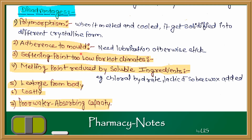Now let's talk about the disadvantages of theobroma oil, which is why other bases were adopted. The first disadvantage is polymorphism. Polymorphism means that when it is melted and cooled, it gets solidified into different crystalline forms. When it melts and resolidifies, it will create crystal forms which may cause irritation or affect uniformity and appearance.